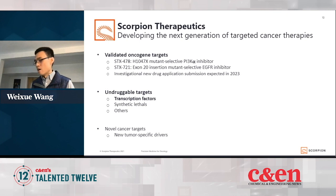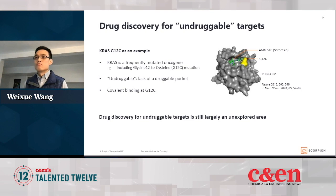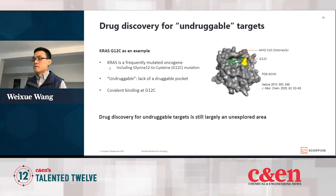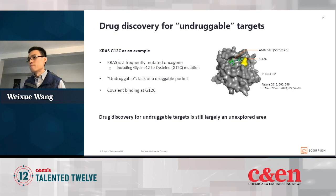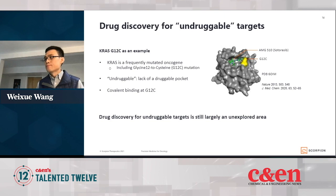So what are undruggable targets? KRAS is a great example. KRAS is a frequently mutated oncogene. The mutations include the glycine-12 to cysteine mutation. It was considered undruggable because there's not a good binding pocket for small molecule compounds to engage. Professor Shokat's lab at UCSF and the pharmaceutical company Amgen first explored covalent inhibition of this target, taking advantage of the cysteine introduced by the mutation. By covalently attaching a small molecule compound to that cysteine, the compound binds to an induced shallow pocket on the surface of the protein and inhibits its function. Despite this great example, drug discovery for undruggable targets is still largely an unexplored area.